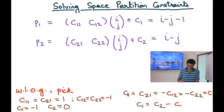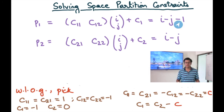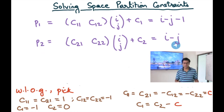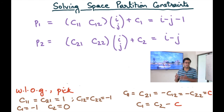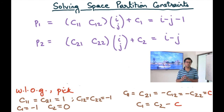Substituting these values: C11 and C12 are 1 and minus 1, small c1 is minus 1, so we get I minus J minus 1 for S1. Similarly, with c2 equals 0, we get I minus J for S2. So P1, the function for statement S1, is I minus J minus 1, and P2, the function for statement S2, is I minus J. This is exactly the solution we had been guessing through graphical methods or trial in previous modules — but this time we arrived at it through a pure algorithm, without any guessing.